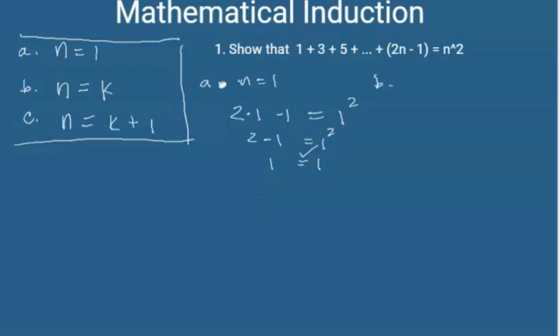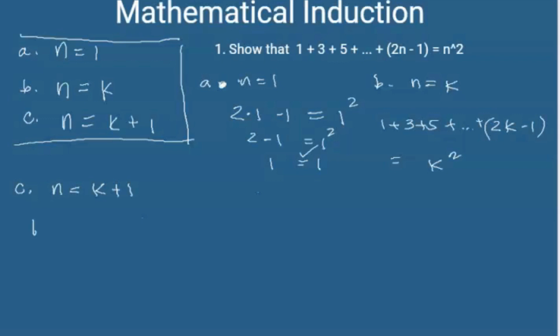The next step is to assume that the statement is true for n is equal to k, so that would look like: one plus three plus five plus ... plus two k minus one is equal to k squared. And then the third step is to prove that if n is equal to k plus one — the next term after k — this statement is still true.